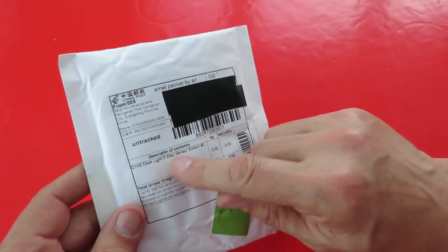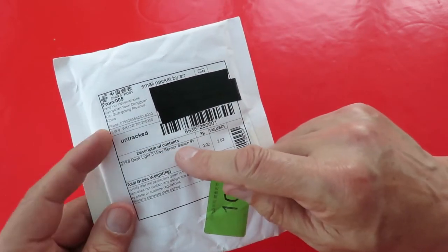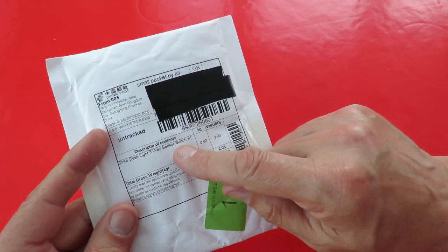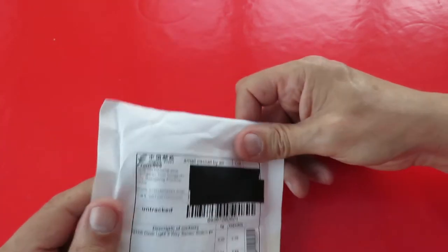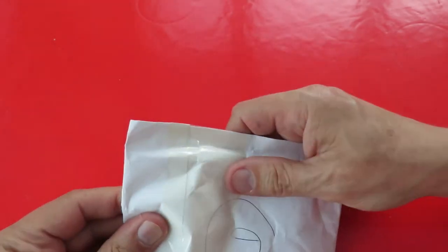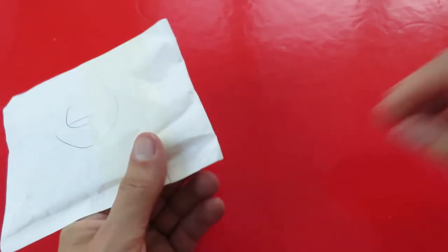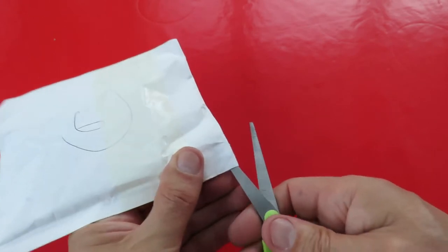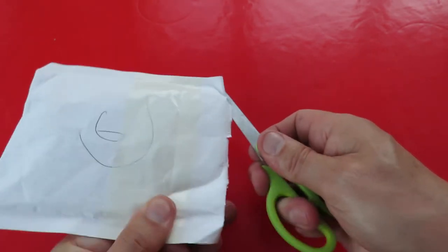Whereas now you can actually buy the complete 3-way sensor switch, quite cheap, from eBay and no doubt other suppliers. So we'll have a quick look inside, check that it actually is what it says it is.